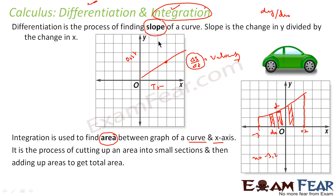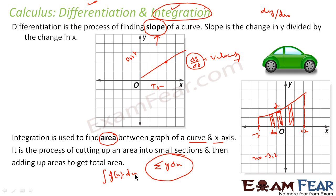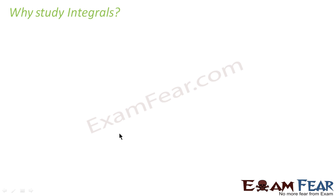To summarize: differentiation is nothing but finding the slope, that is dy/dx. Integration is nothing but finding the area — you sum y·Δx over small intervals. The convention is written as the integral of f(x)·dx from x = -3 to 2, for example. At each value of x, f(x)·Δx gives a small rectangle area, and you keep adding these to get the total area. That is integration.